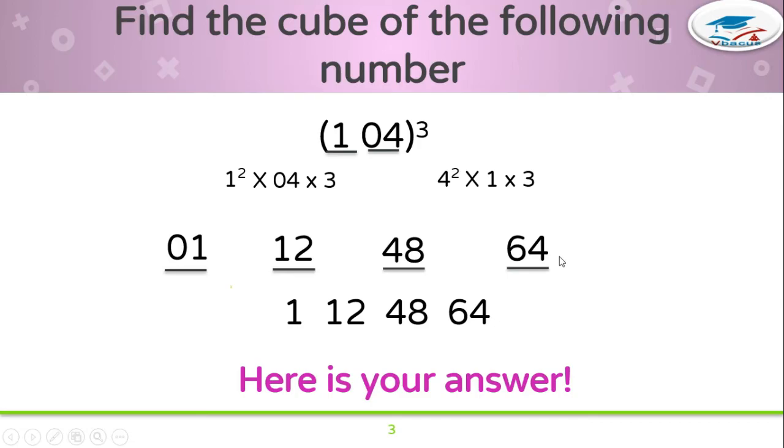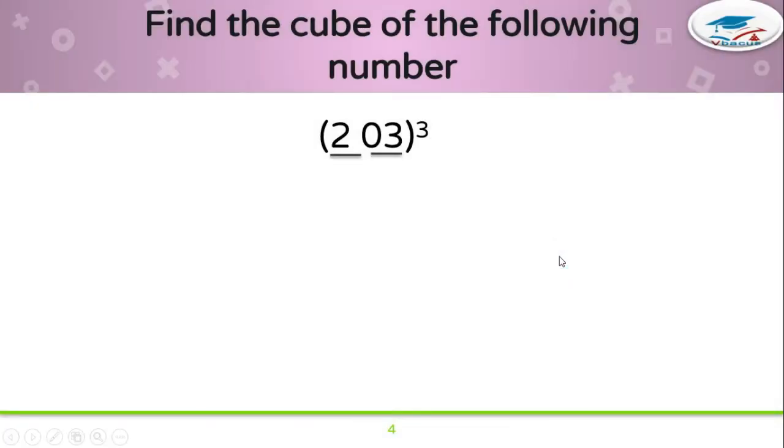Let us take one more example: 203. Again make it into two parts - first is 2, then 03. Insert 4 dashes. On first dash, write the cube of 2, that is 8. Now on fourth dash, write the cube of 3, that is 27.